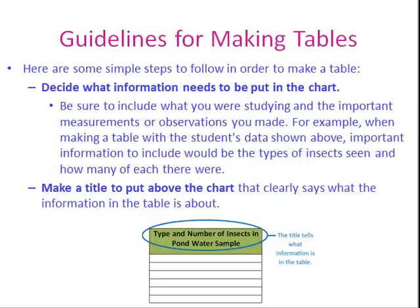Here are some simple steps to follow in order to make a table. Decide what information needs to be put in the chart. Be sure to include what you were studying and the important measurements or observations you made. For example, when making a table with the student's data shown, important information to include would be the types of insects seen and how many of each there were. Then, make a title to put above the chart that clearly says what the information in the table is about. In our sample, we put a title of 'type and number of insects in pond water sample.'